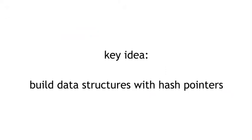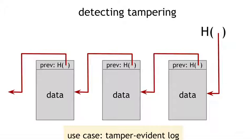A key idea here: take any data structure — a linked list, a binary search tree, or something like that — and implement it with hash pointers instead of regular pointers. For example, here's a linked list built with hash pointers. This is a data structure we're going to call a blockchain. Just like a regular linked list where each block has data and a pointer to the previous block, here the previous block pointer is replaced with a hash pointer that says where it is and what the value of the entire previous block was. We remember the head of the list as a regular hash pointer.